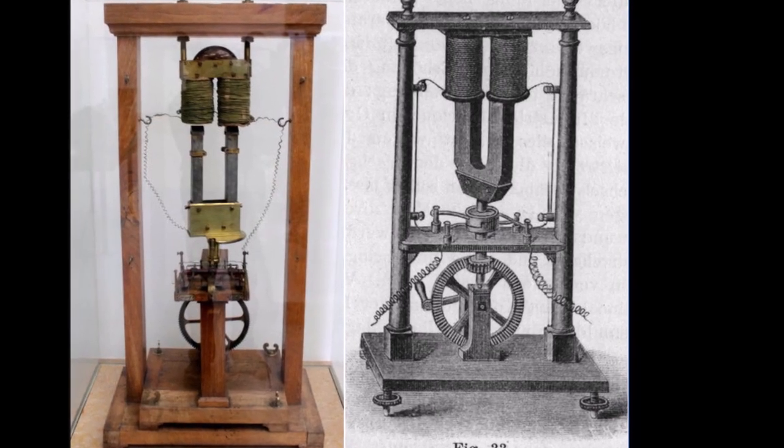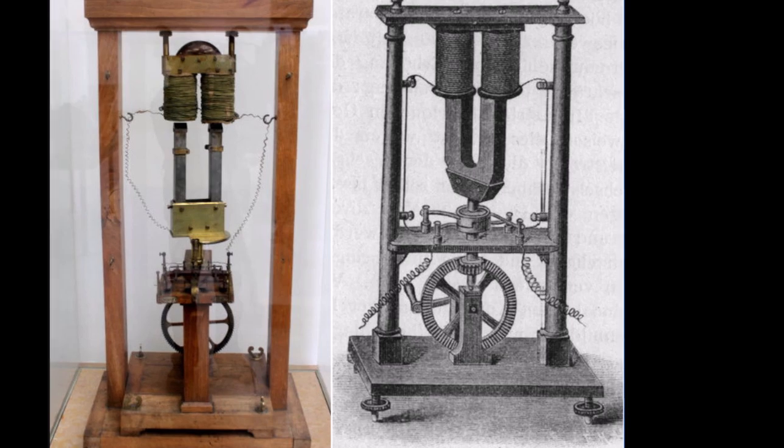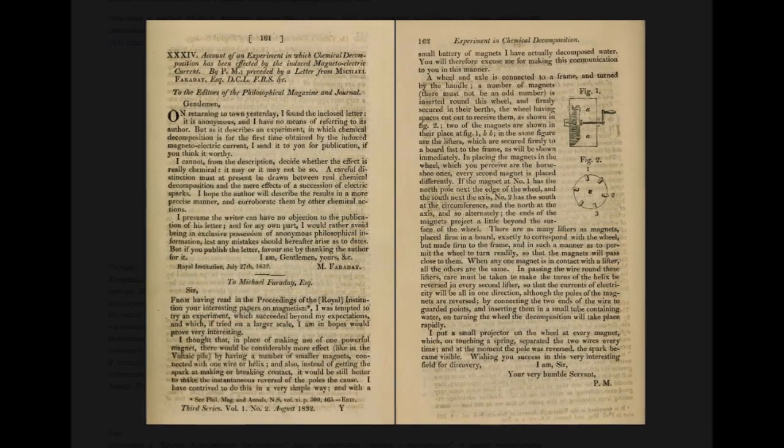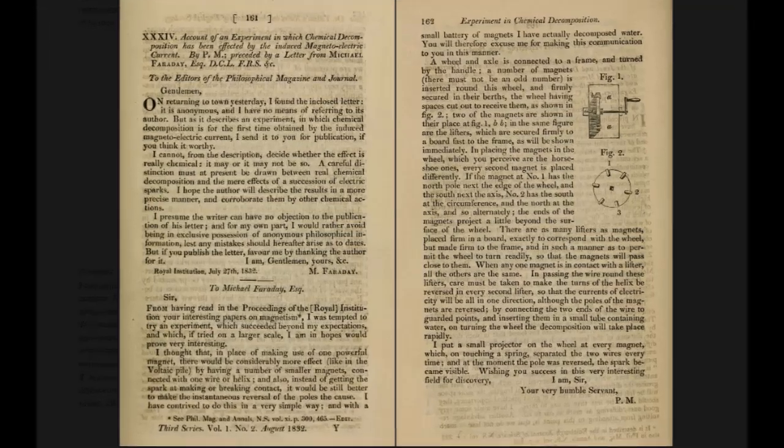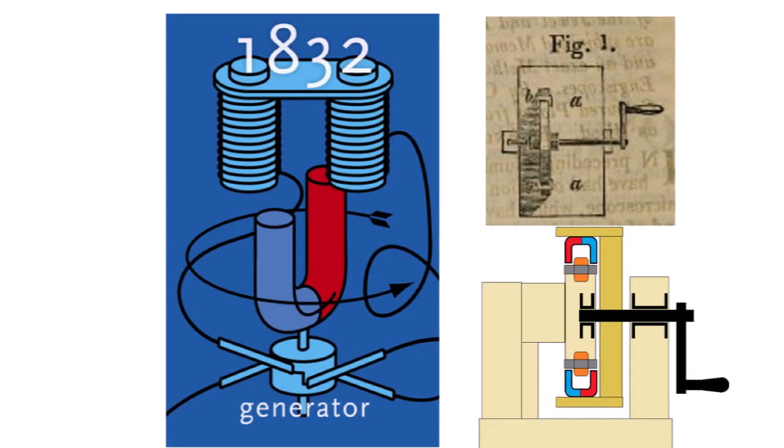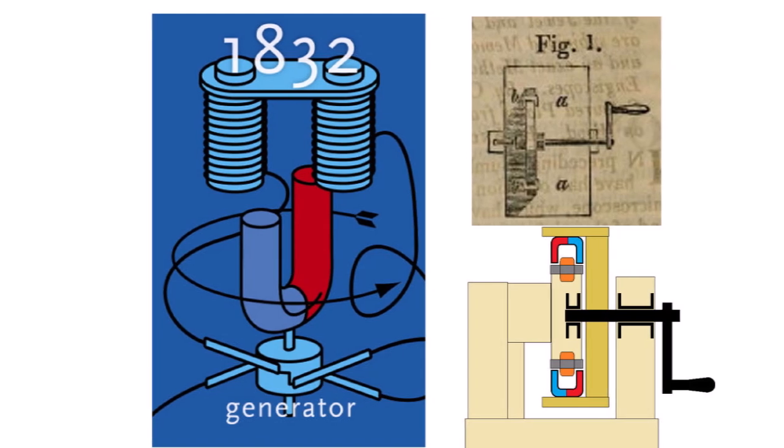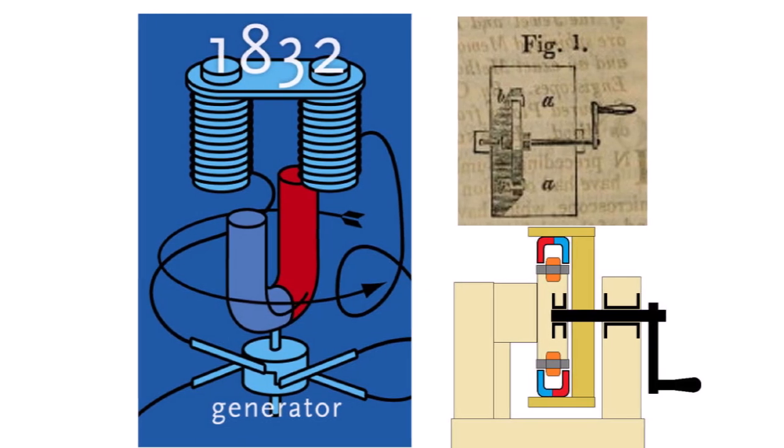The magnet closed the magnetic flux in the core when rotating. In the same 1832, an unknown person with the letters MP sent Faraday a letter describing another electromagnetic generator. This type of generator had coils wound on cores and horseshoe magnets mounted on a movable rotor.